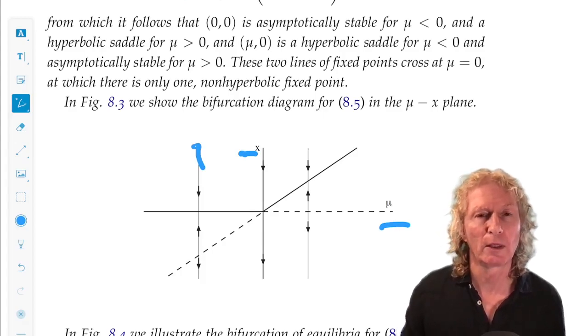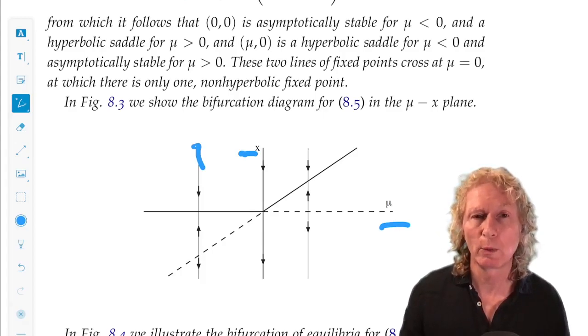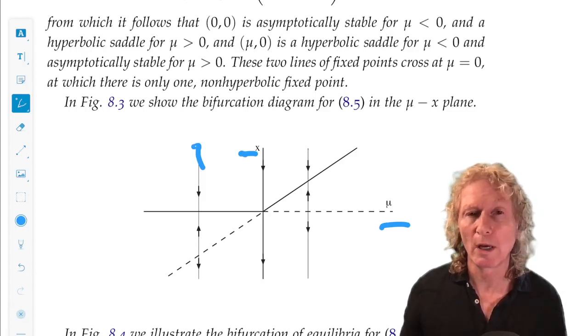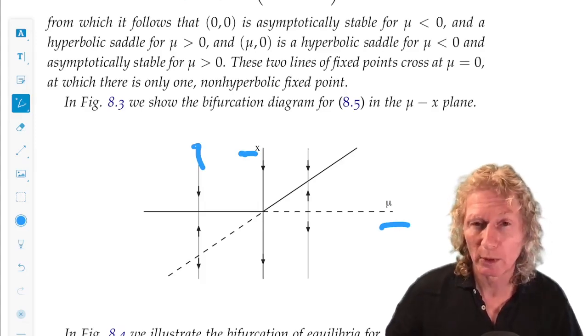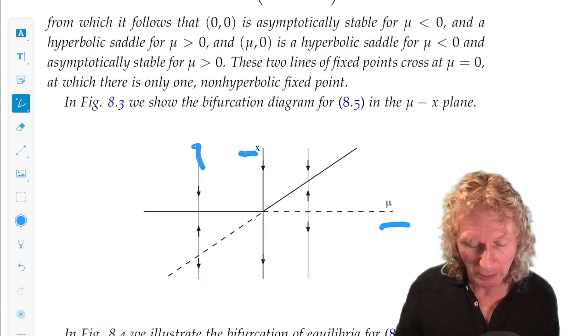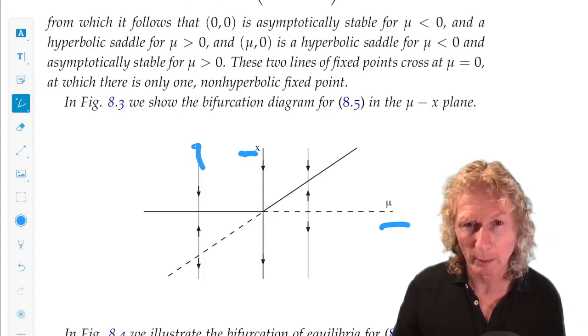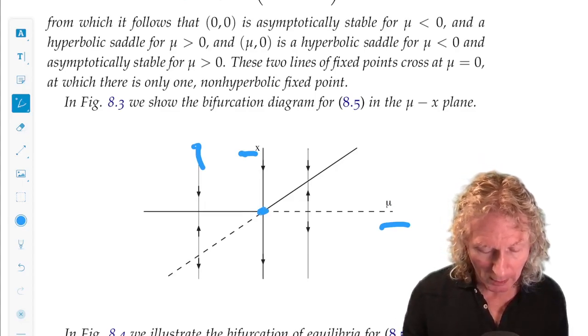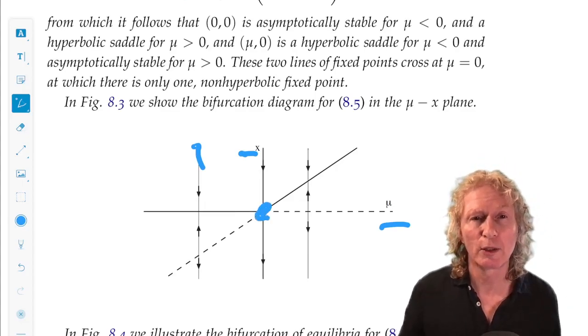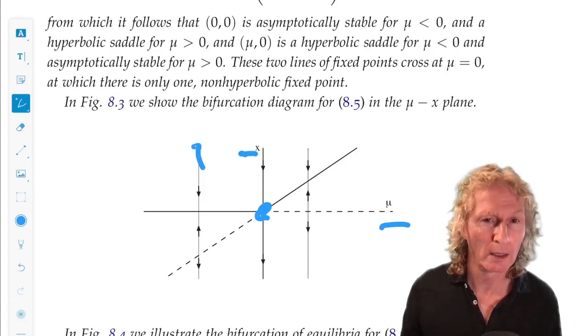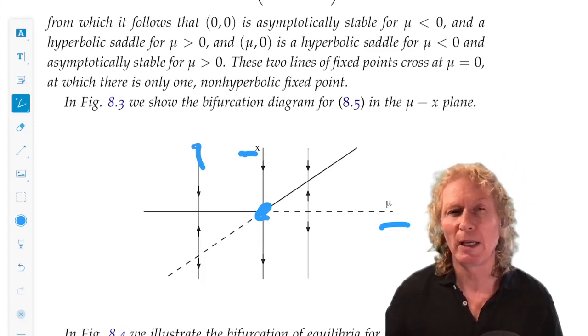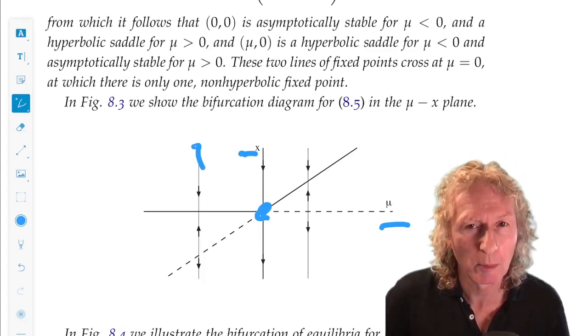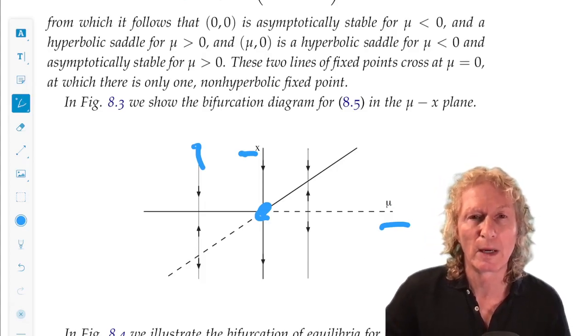Saddle node went from 0 to 2 equilibria. An intermediate step, 2 coalesced into 1 non-hyperbolic. This one goes from 2 equilibria to 2 equilibria. 2 equilibria for mu less than 0, 2 equilibria for mu greater than 0, but at the non-hyperbolic value, they coalesce into one non-hyperbolic equilibrium. So 2, 1, 2. We get a change in the number of equilibria at the non-hyperbolic value of the parameter.